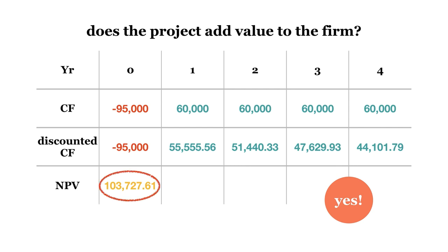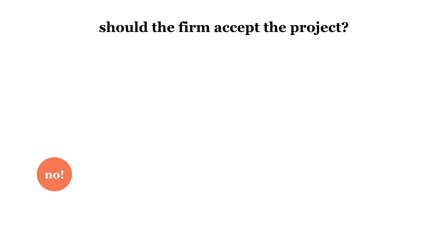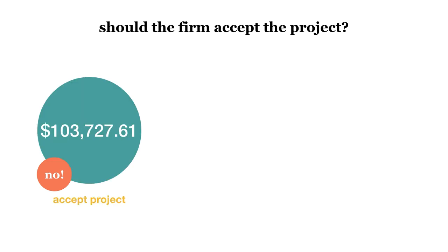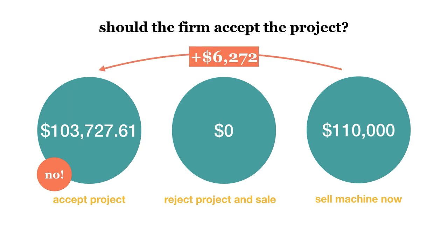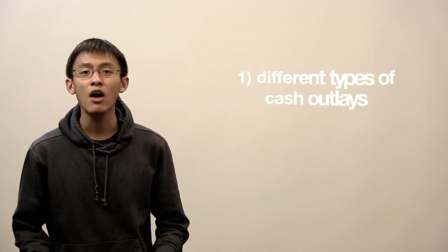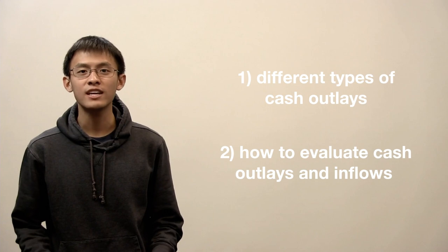So, should the firm accept the project? No, the firm should not accept the project, as we need to consider the opportunity cost. When evaluating an investment, the firm must consider the value of the best alternative. The value of selling the machine now is higher than the value gained from accepting the project by $6,272. Thus, the firm should sell the machine now — if the firm chooses to invest in the machine rather than selling it, they would be worse off in today's dollars by $6,272. You have now understood the different types of cash outlays and how to evaluate cash outlays and inflows in an investment project decision.